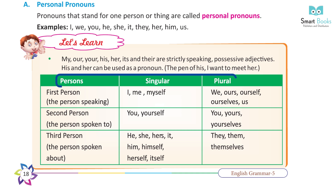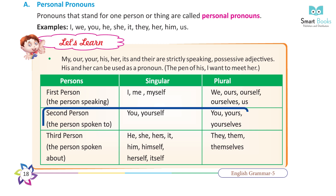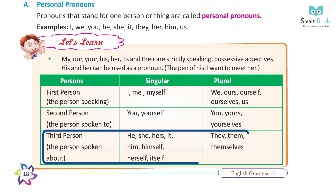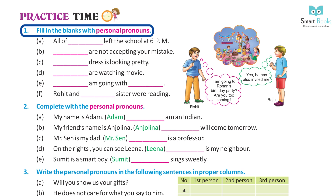Personal pronouns by person — First person (the person speaking): singular: I, me, myself; plural: we, ours, ourselves. Second person (the person spoken to): you, yourself, yours, yourselves. Third person (the person spoken about): he, she, her, it, him, himself, herself, itself, they, them, themselves.